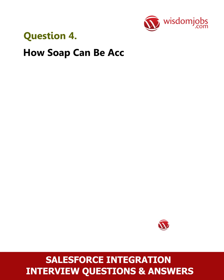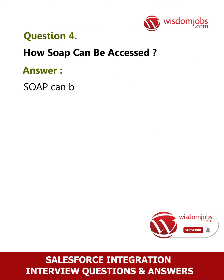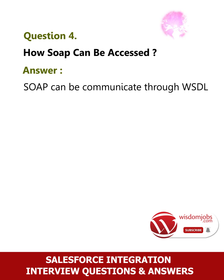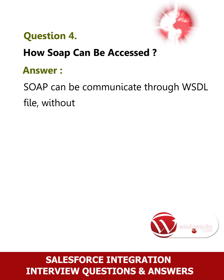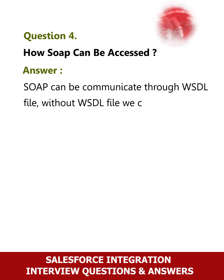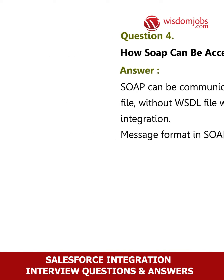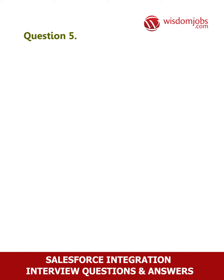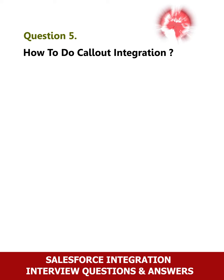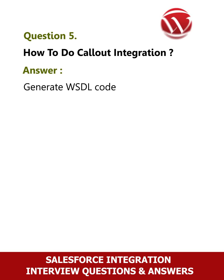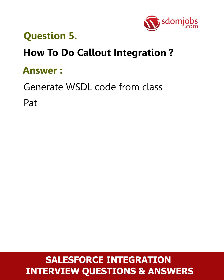Question 4: How can SOAP be accessed? Answer: SOAP communicates through a WSDL file; without a WSDL file we cannot do integration. The message format in SOAP is XML. Question 5: How to do callout integration? Answer: Generate WSDL code from the class path, set up, develop the Apex class.